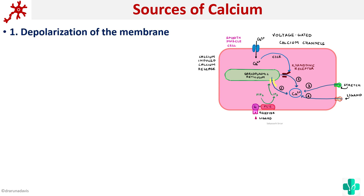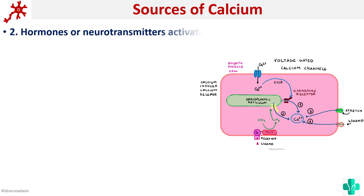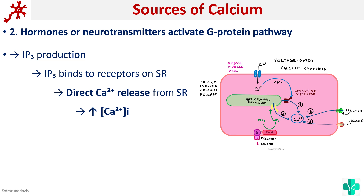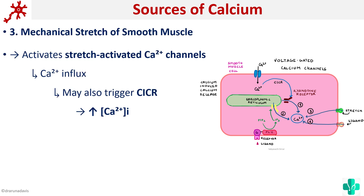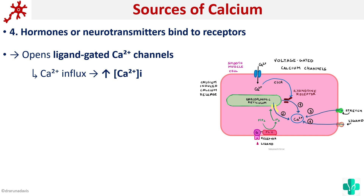So, what are the different sources of calcium? First, depolarization of the membrane opens voltage-gated calcium channels and triggers calcium-induced calcium release, causing calcium influx. Second, via the G-protein pathway — the IP3-DAG pathway — causing direct release of calcium from the sarcoplasmic reticulum. Third, mechanical stretch opens stretch-activated calcium channels, again causing influx of calcium. And finally, ligand-gated channels can open and cause influx of calcium. These are the four methods by which calcium can increase within the smooth muscle.